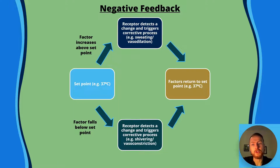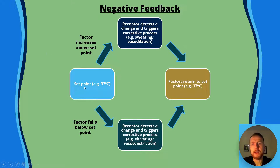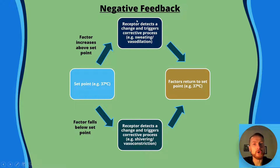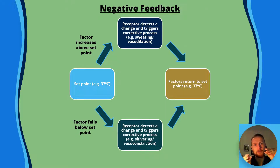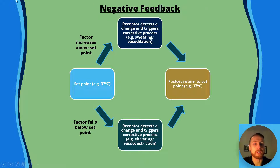Let's take a look at negative feedback. Your body would be at 37 degrees and all the enzyme-catalyzed reactions will be progressing at a good rate. But if the temperature increases beyond this — the factor increases above the set point — receptors will detect a change and trigger corrective responses. In the case of your temperature increasing beyond the set point, you will sweat and also have vasodilation, where the arterioles open up, the lumen increases, more blood flow gets to the surface, and you can lose more heat via sweating and external heat loss to the environment. Eventually those changes bring your temperature back to the set point, at which point sweating and vasodilation will stop.